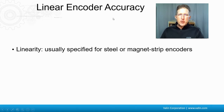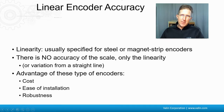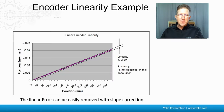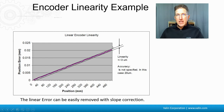Linearity is usually specified for steel or magnetic strip encoders, and there is no accuracy of the scale — only the linearity, or the variation from the straight line. The advantage of these types of encoders, as I mentioned last episode, is the cost, the ease of installation, and the robustness for different environments. If we look at this linearity example over half a meter, 500 millimeters, the position error goes up. Even though the accuracy is not specified — in this case it's 20 microns — the linearity is specified at plus or minus three microns in this example. That can be easily corrected with some slope correction in the electronics.